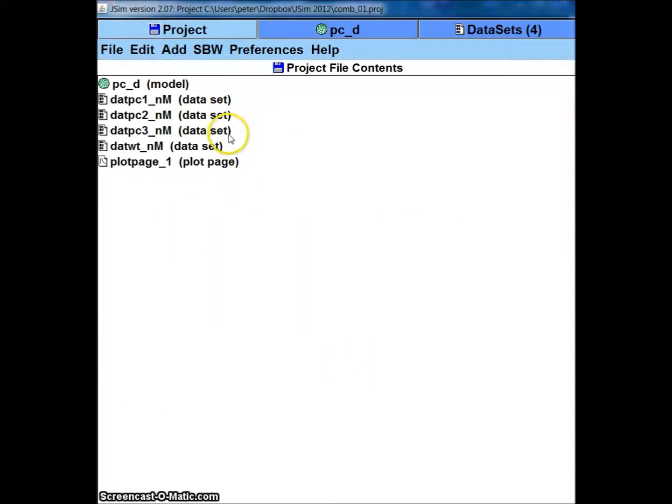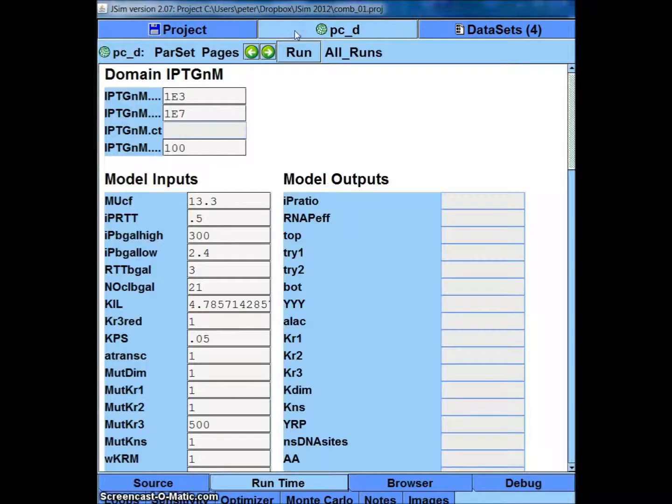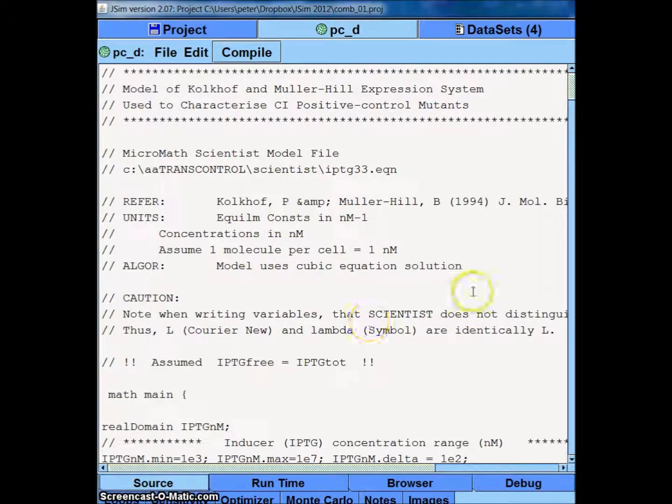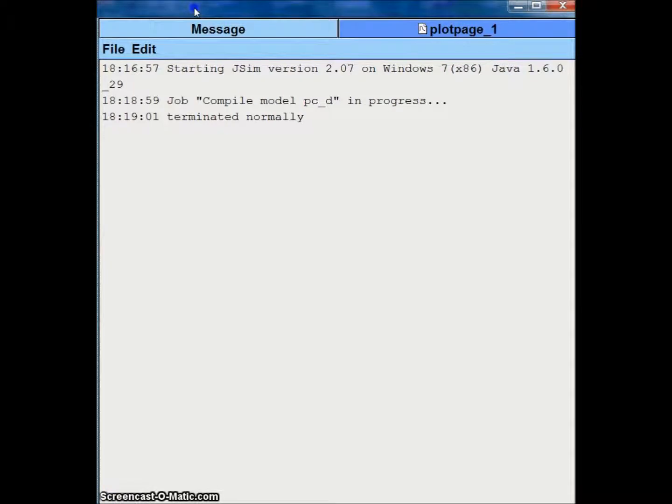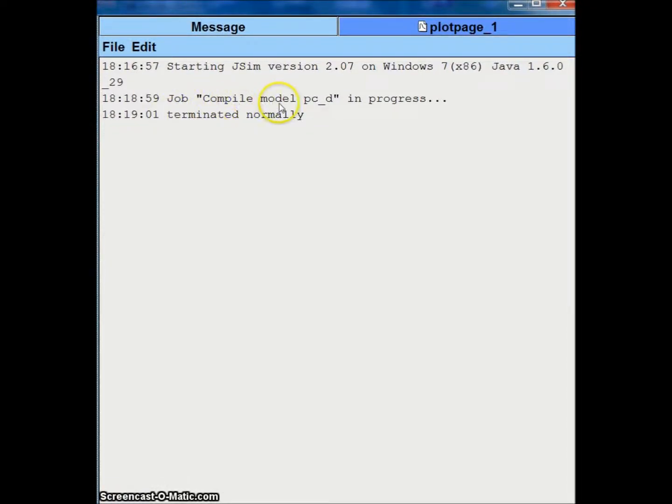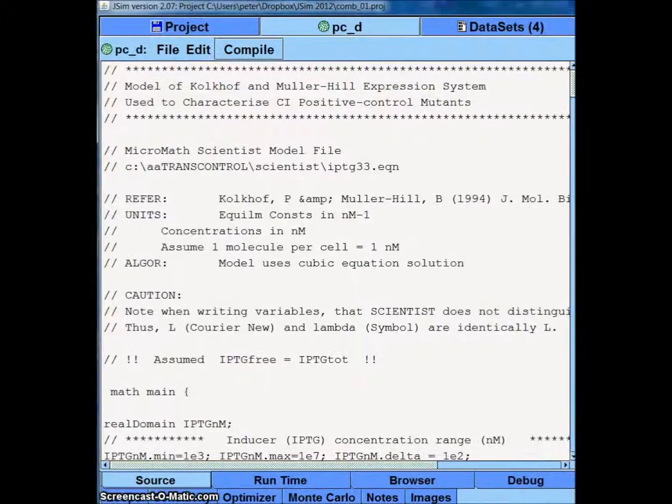It drags in all the data files as well as the source file. If we click up the top here, we can see all the model inputs. We can see this source file, so that's all the equations. If we look over at this side, we'll see that when it dragged it in, it automatically compiled it and it says terminated normally. This is the right-hand panel. Going back to the left-hand panel.